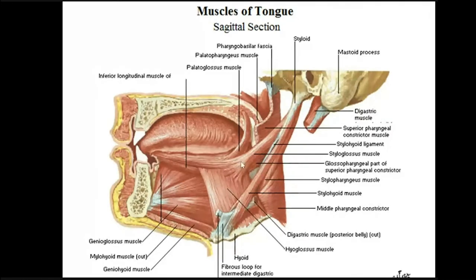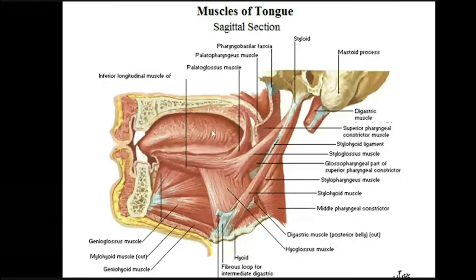The styloglossus elevates the tongue. The hyoglossus depresses the posterior one-third of the tongue during deglutition. The palatoglossus depresses the soft palate during breathing and elevates the posterior one-third of the tongue toward the soft palate during deglutition. So the four extrinsic muscles on each side are: palatoglossus (a muscle of soft palate originally), hyoglossus, styloglossus, and genioglossus. The genioglossus is the only one which pulls the tongue forward.